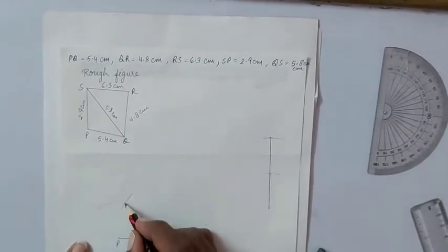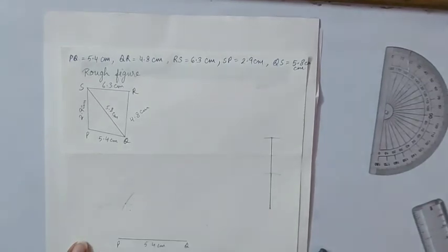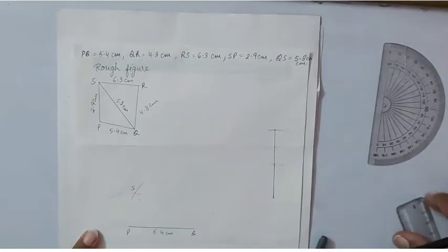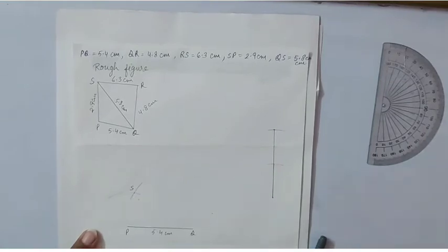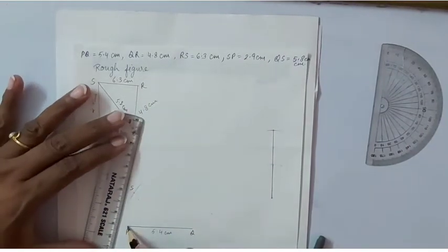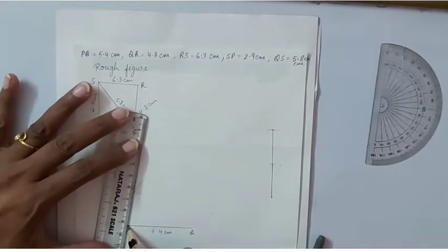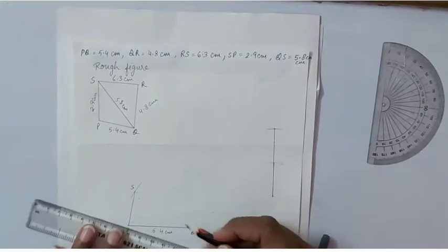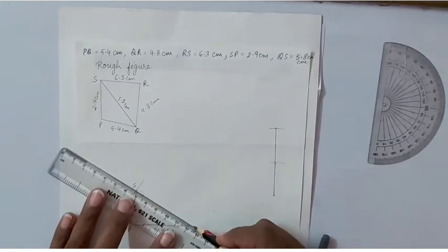We will cut an arc for QS intersecting the previous arc. So that is point S. Now we will join PS and SQ.